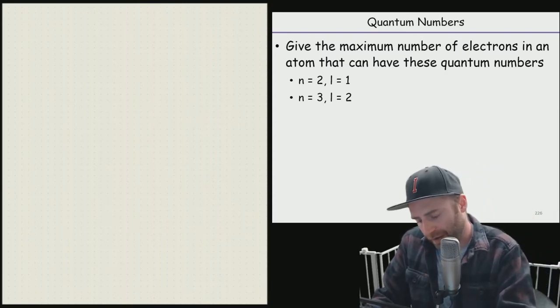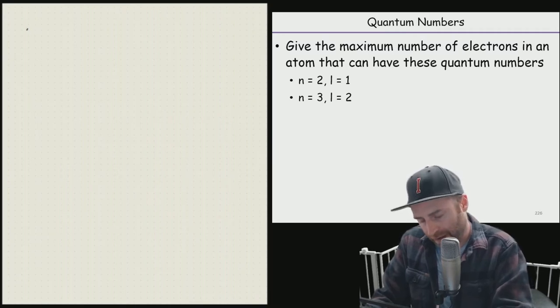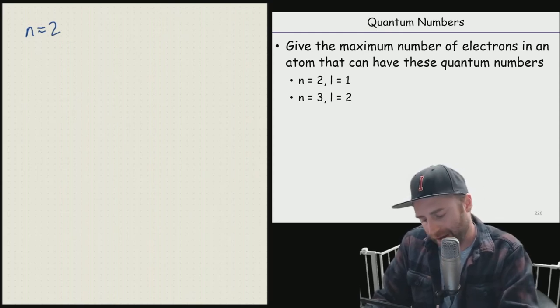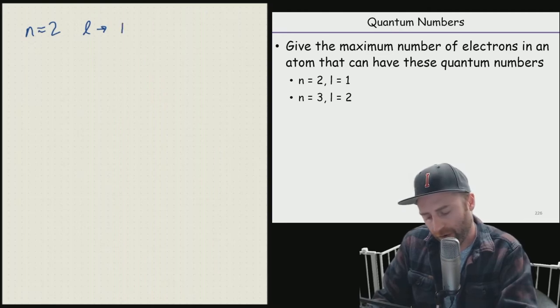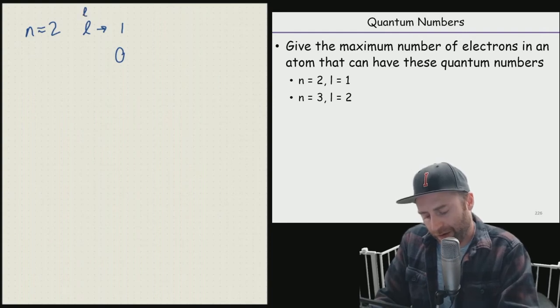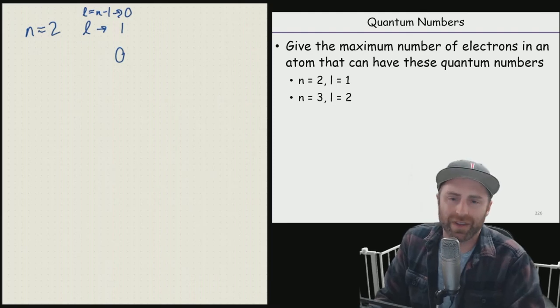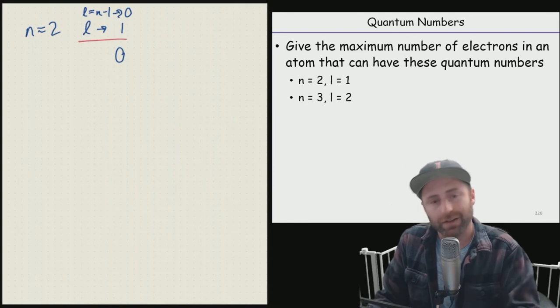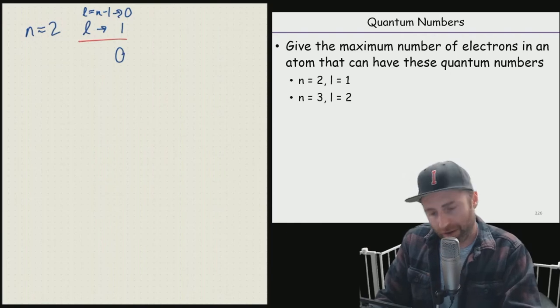If we've got ourselves a situation where we have n equals two, we know that L could theoretically equal either one or zero. We know that because the rules for L are L equals n minus one all the way through the number zero. Specifically though, the problem is telling us L is equal to one, which makes our lives a little easier.